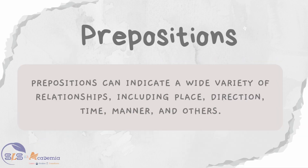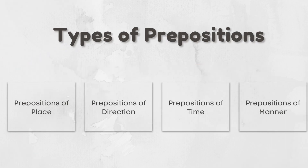Prepositions can indicate a wide variety of relationships and they come in different flavors, each serving a unique purpose. Some of the common types of prepositions include place prepositions, direction prepositions, time prepositions and manner prepositions. Let us understand each of these types, starting with the place prepositions.